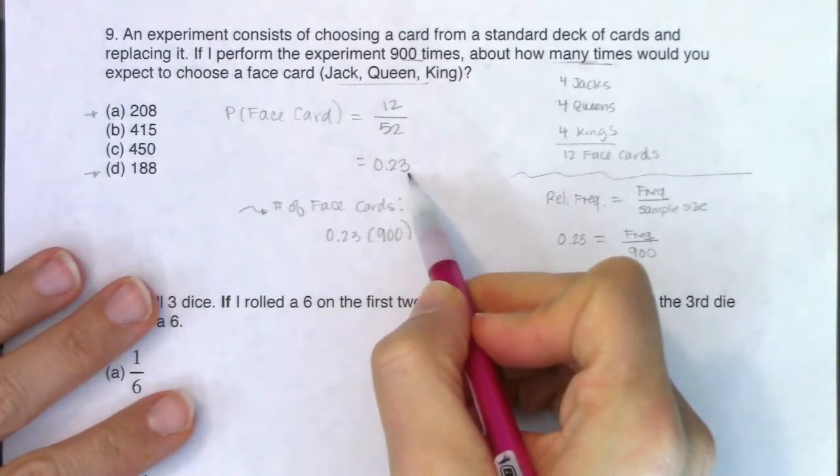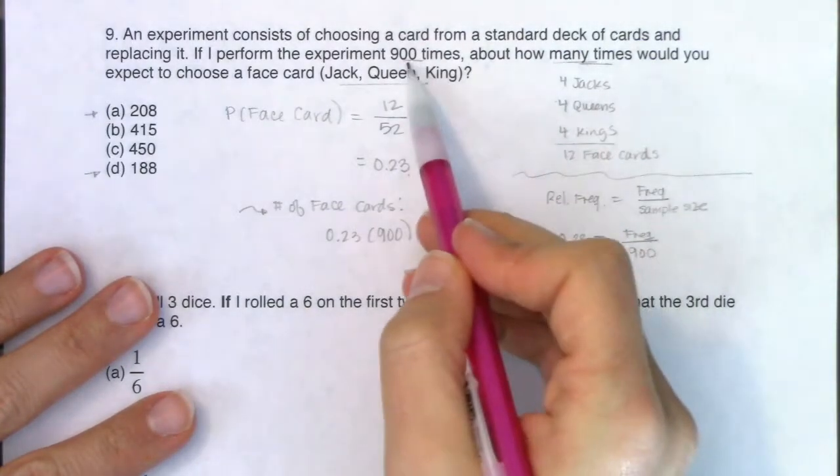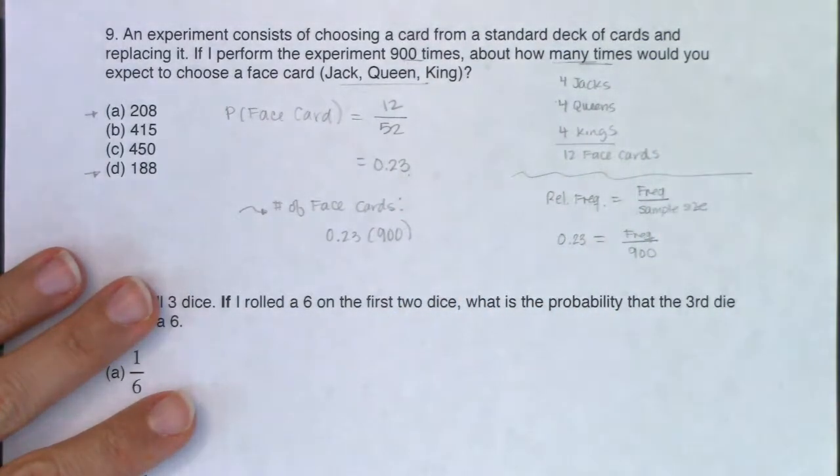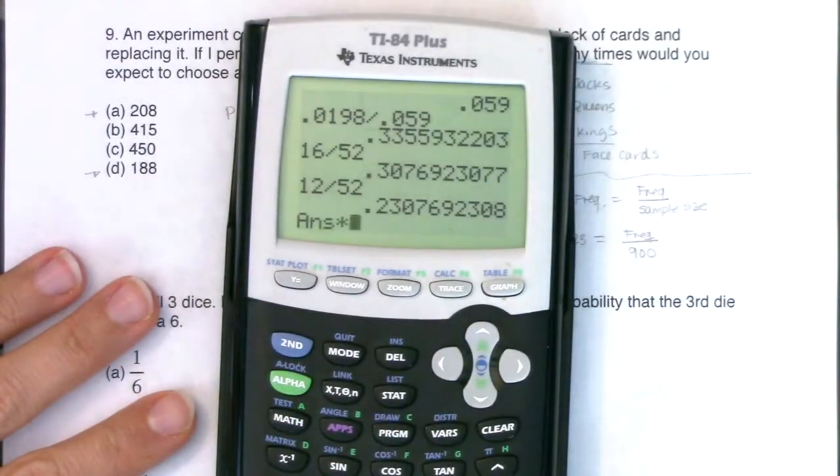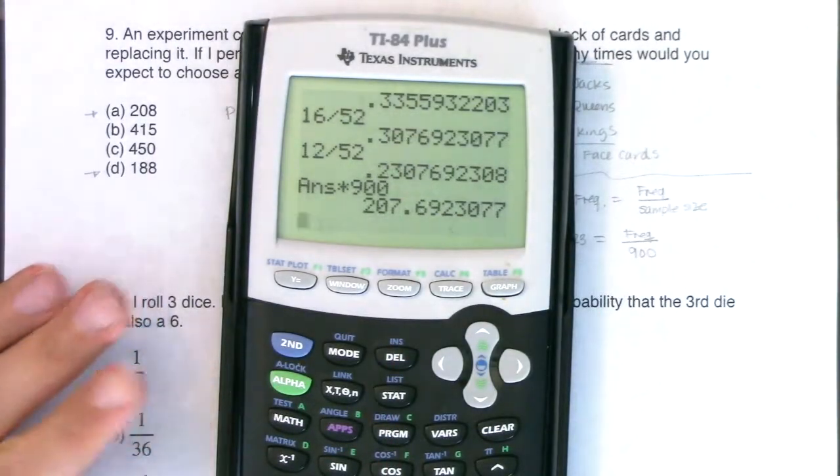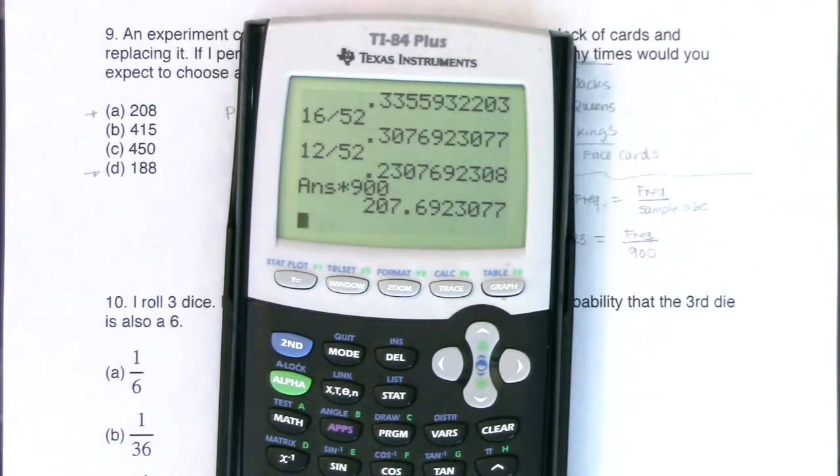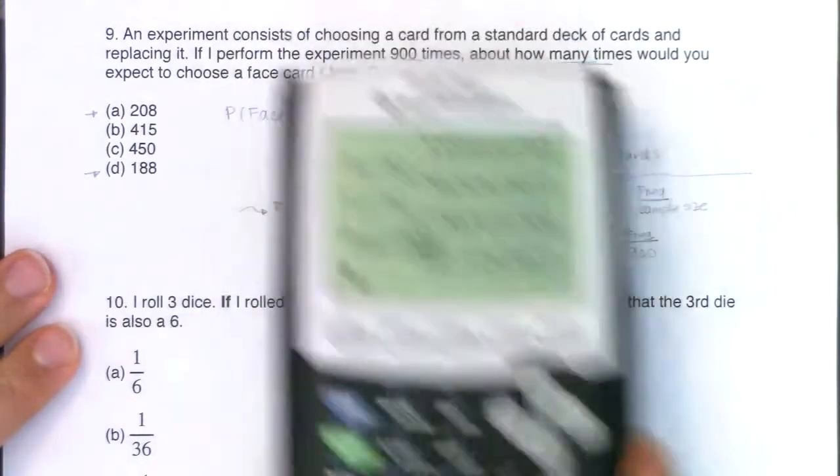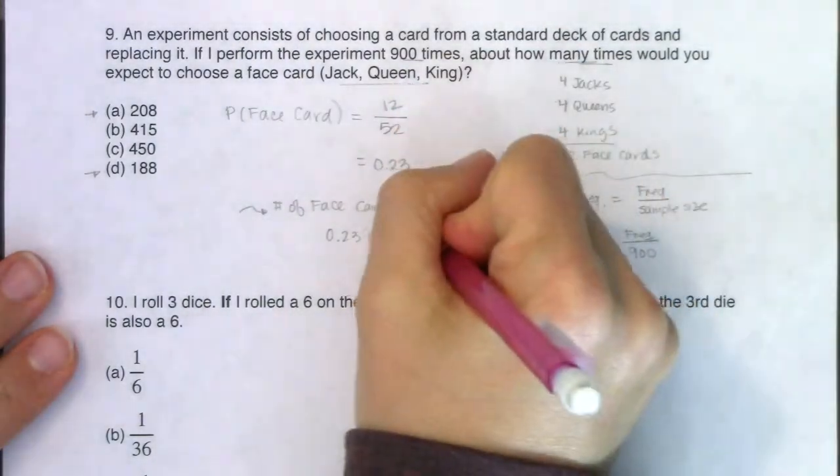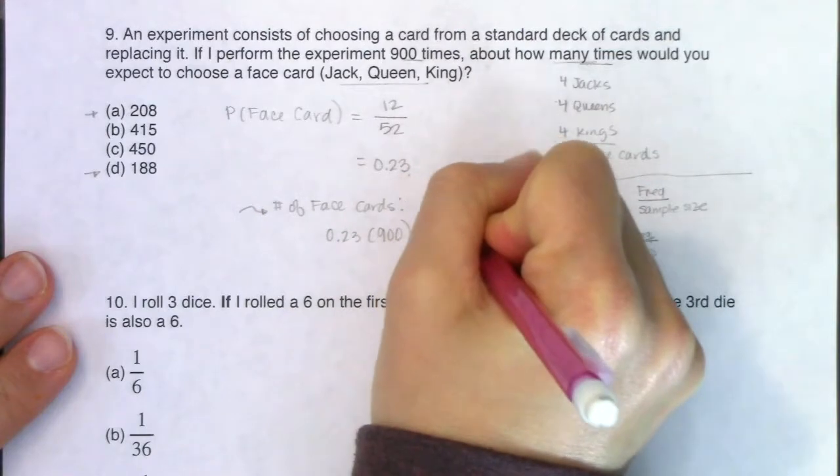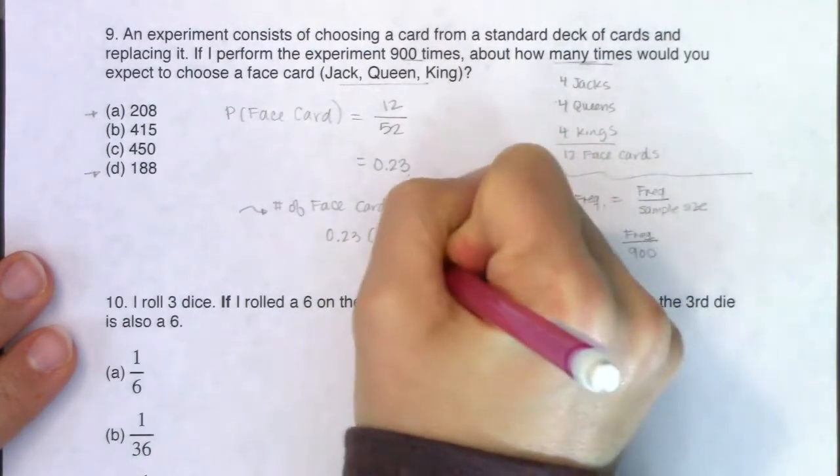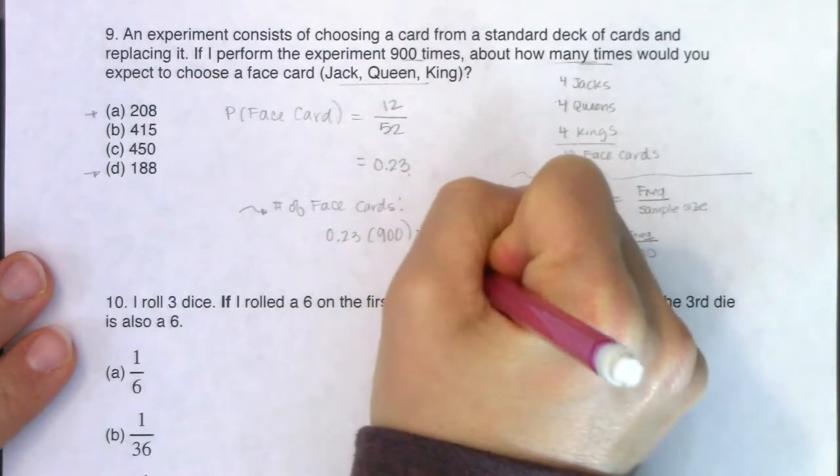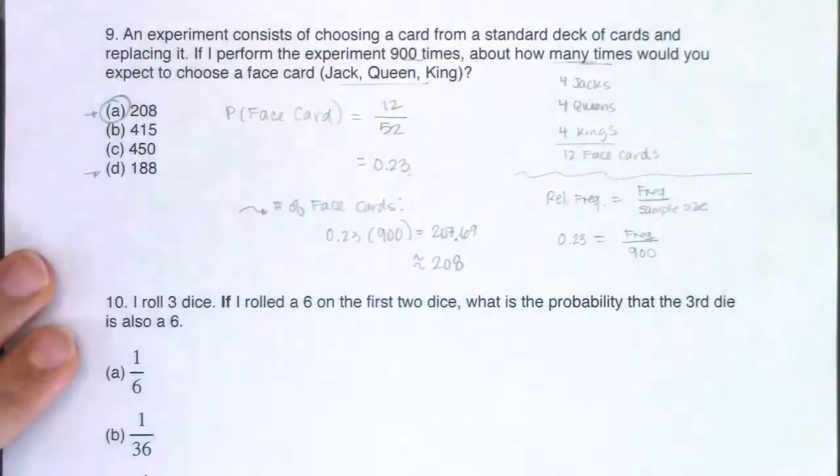So if I actually want to figure out the number of face cards that I'm going to expect to see, that would be equal to 0.23 times 900. Because again, if you see a face card 23% of the time, then 23% of those 900 times, I'm going to expect to see a face card. So let me just multiply this by 900. It looks like I'm getting 207.69. The closest answer I see in my A through D options is 208. So I'm going to go with the answer A.